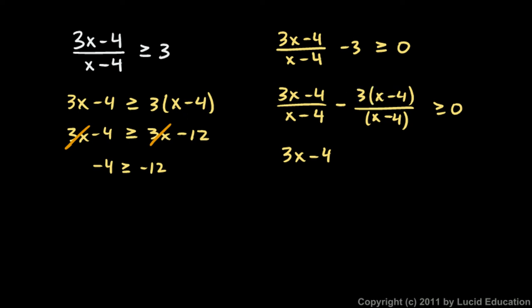And then I have this minus 3 times negative 4, which is the same as plus 12, and all of that is over x minus 4, and it's all greater than or equal to 0. Now the 3x cancels out, and I'm left with negative 4 plus 12, which is 8 over x minus 4 is greater than or equal to 0.